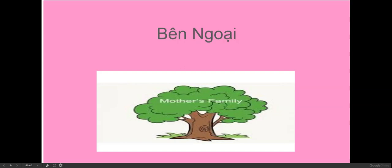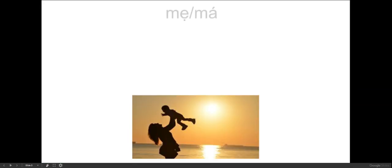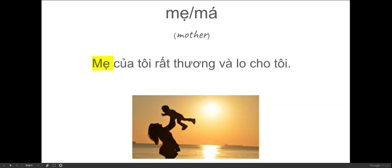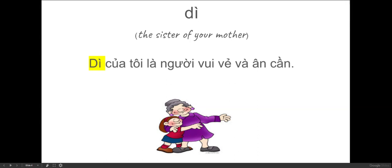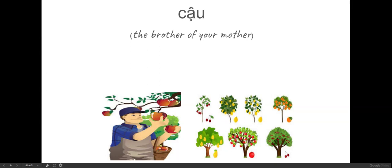So now let's review the family terms both on the maternal and paternal side again. Bên ngoại, which means maternal side. Mẹ or má means mother. A sentence example would be: mẹ của tôi rất thương và lo cho tôi — that means my mother really loves and cares for me. Dì is the sister of your mother. Dì của tôi là người vui vẻ và ân cần — that means my aunt is a happy and caring person. Cậu is the brother of your mother, despite being older or younger than your mother.